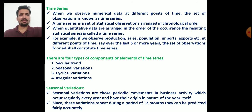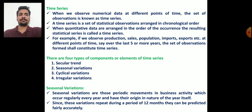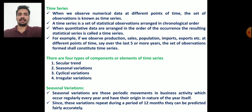For example, if we observe any production, population, sales, imports, or exports data at different points of time — say yearly, monthly, or five-yearly — that set of observations constitutes a time series. So when we arrange any statistical data in chronological order, it is time series data.